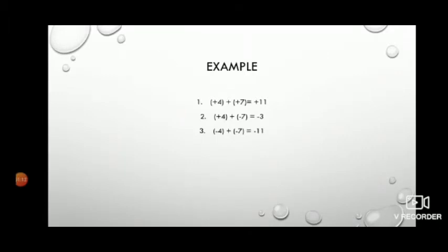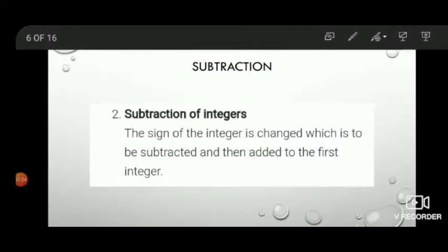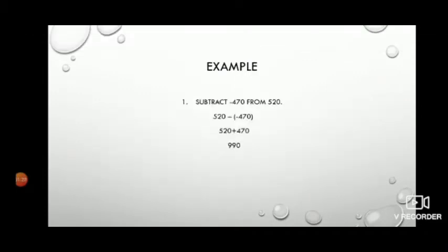Subtraction of integers has one step more than addition. We have to change the sign of the number we are going to subtract, then follow the same procedure as addition. For example: subtract minus 470 from 520. That gives us 520 minus of minus 470, so we change the sign of 470 to get 520 plus 470. Both are positive, so we add to get 990.